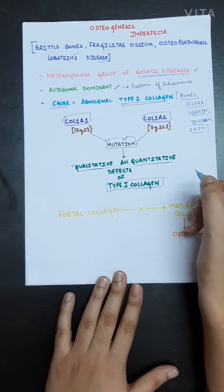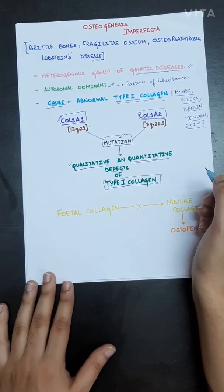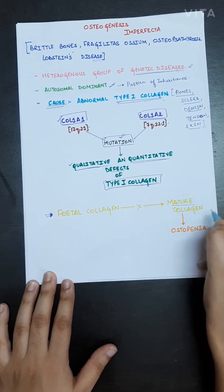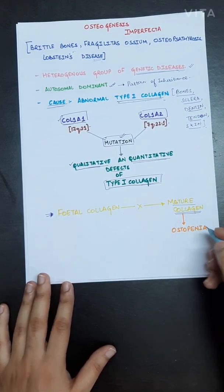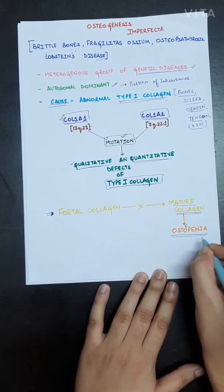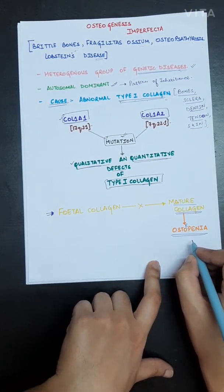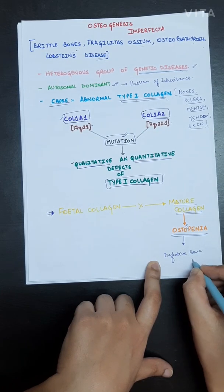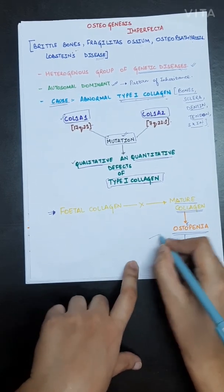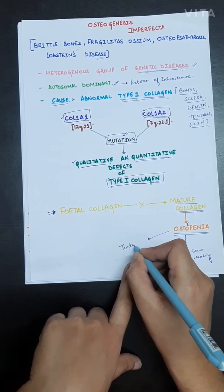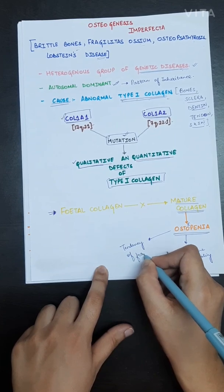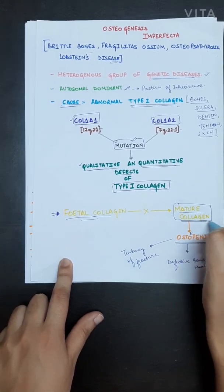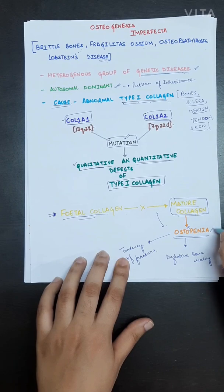The basic cause behind the disease is that fetal collagen cannot be transformed into mature collagen, which results in osteopenia. Osteopenia leads to a tendency for fracture and defective bone healing, which are the hallmark features of osteogenesis imperfecta.